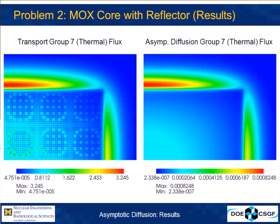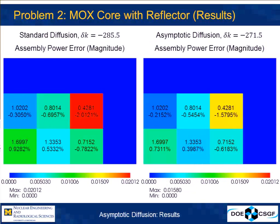Since I haven't done flux reconstruction for the multi-D problems yet, we can look at assembly powers across the six 17-by-17 assemblies. The top numbers are the normalized assembly powers from the transport solution; the bottom numbers are the relative errors between diffusion and transport power, with color indicating error magnitude. For all six assemblies, the asymptotic diffusion method gives a slightly better estimate of the assembly power.